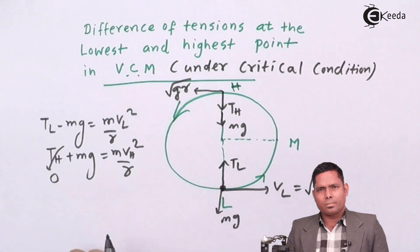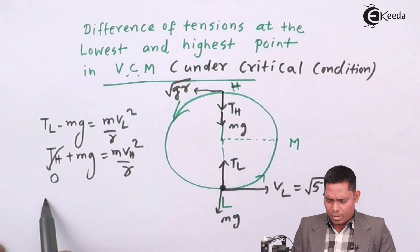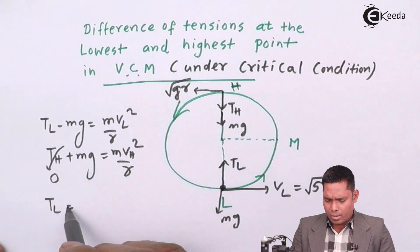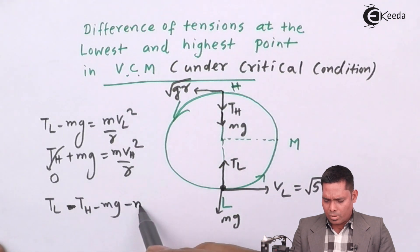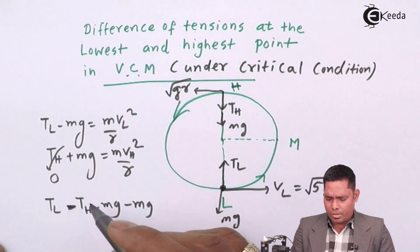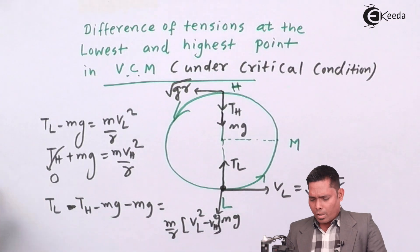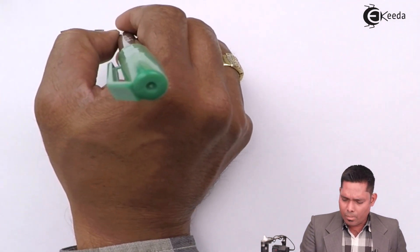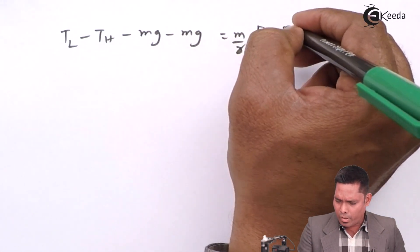Taking the difference of the two tension equations: T_L - T_H - MG - MG = (M/R)(V_L² - V_H²). Rewriting: T_L minus T_H minus 2MG equals M/R times (V_L² - V_H²).